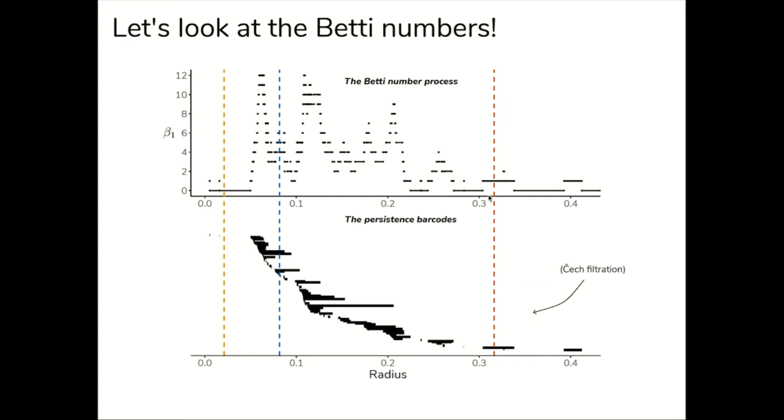For a large radius, the dashed red line, we see the same. There's too much connectivity and homology gets cancelled out. When the radius is in between, or the dashed blue line, we get a lot of one cycles forming. We see a camel's hump, specifically a Bactrian camel, in the Betti number process.